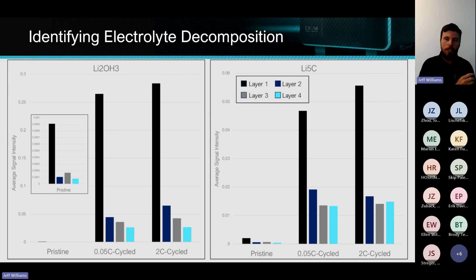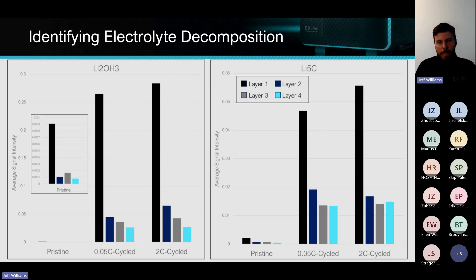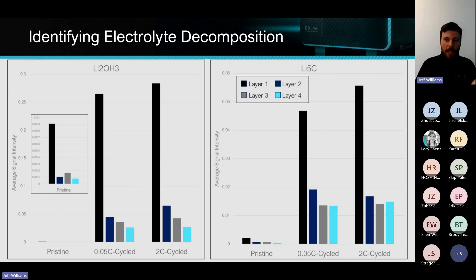We do this across a lot of our application spaces — whether it's additive manufacturing powder looking for statistical inclusions of contaminants, or here in the battery space: how big are those dendrites, how deep are they, and what's the species? Looking at the map is more useful sometimes than just looking at the average — though the average is obviously very useful as well.